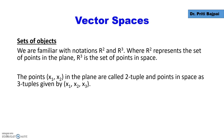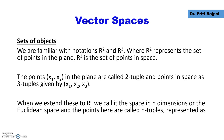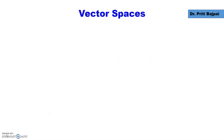The points x1, x2 in the plane are called two-tuples, and the points in the three-dimensional space, x1, x2, x3, are called three-tuples. When we extend this to the space Rⁿ, we call it a space in n dimensions, or we also call it the Euclidean space, and the points here are called n-tuples.